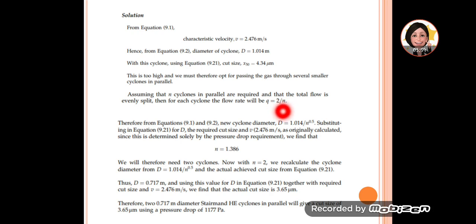Now the diameter will have the n unknown. We substitute this new diameter into equation 9.21 to obtain the required cut size, which is 4. The V is still the same as calculated originally because it is determined solely by the pressure drop.